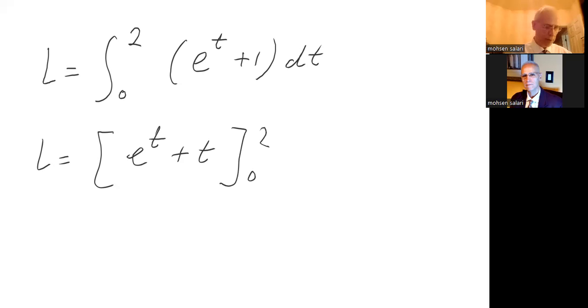And that equals when I plug two I get e squared plus two minus, e to the zero is one plus zero, so this equals two and this is length. Length equals e to the second, two minus one gives me just a plus one. So in this example we didn't hit any obstacles, it was a good one. Talk to you soon.